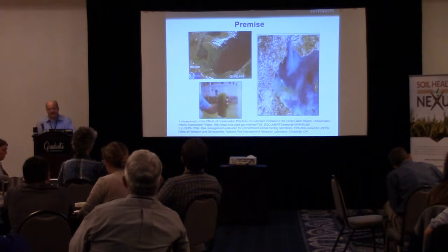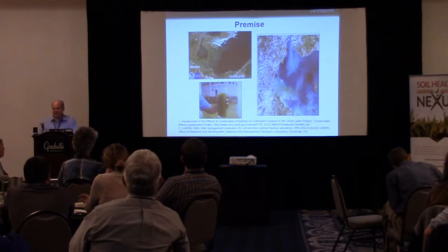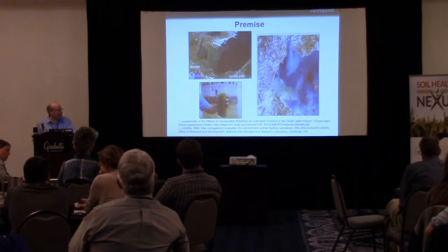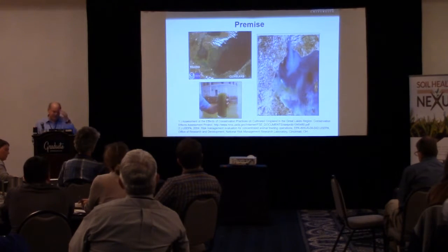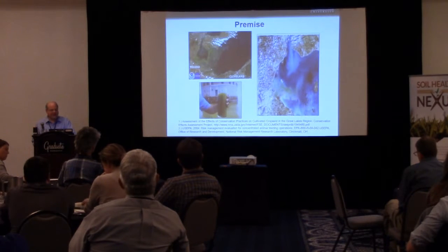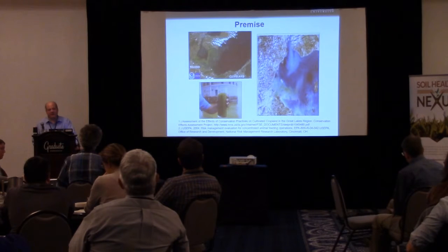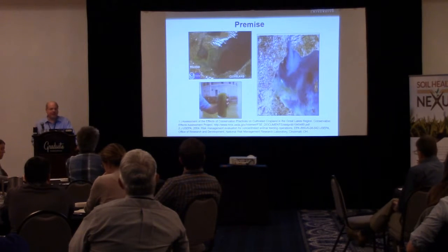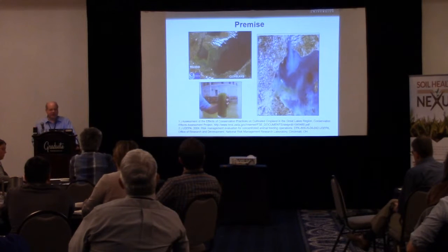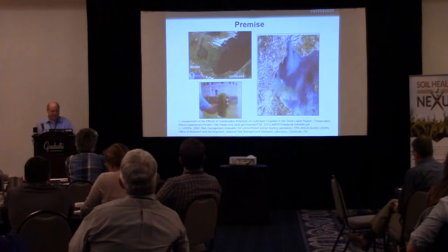Some of you have seen these pictures before showing the impact of soluble phosphorus. The one on the bottom left is the Toledo intake for drinking water, a system that serves 400,000 people. There was so much cyanobacteria — blue-green algal growth — that they had to shut the system down for two and a half days. You couldn't even boil the water because of the airborne release of microcystin, a byproduct from the cyanobacteria that is toxic to humans. It's incredible to think of a municipality — about the 30th largest in the country — being shut down because of cyanobacteria that was probably due to soluble phosphorus.